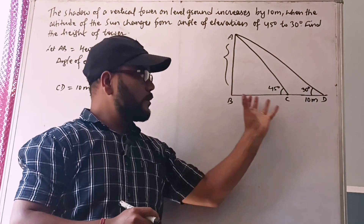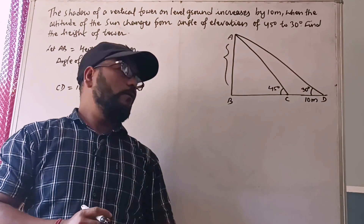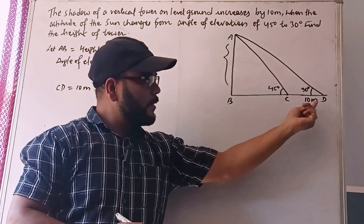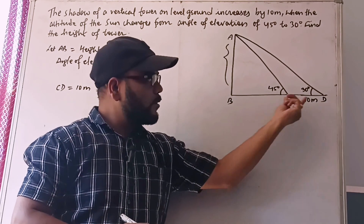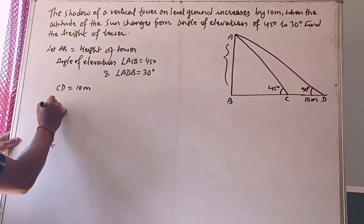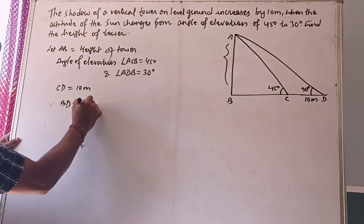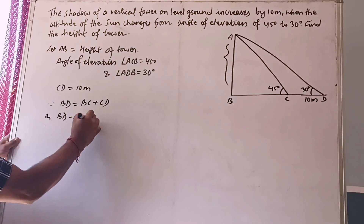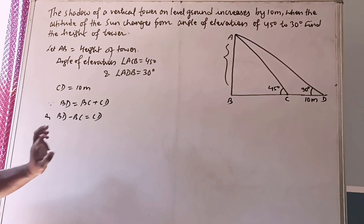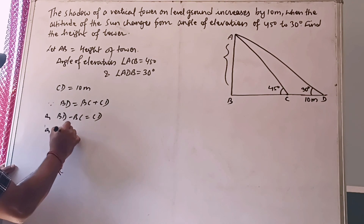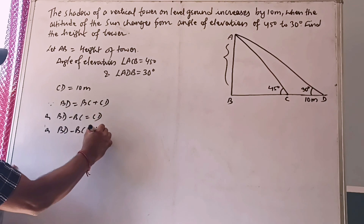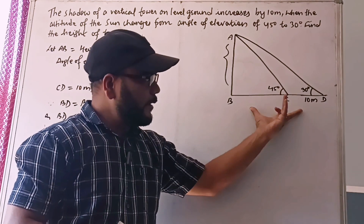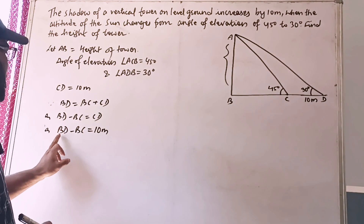Now, BD can be written as BC plus CD. From this relation, BD minus BC equals CD. CD is almost 10 meters. So from the relation BD = BC + CD, we found the value of BD minus BC as 10 meters.